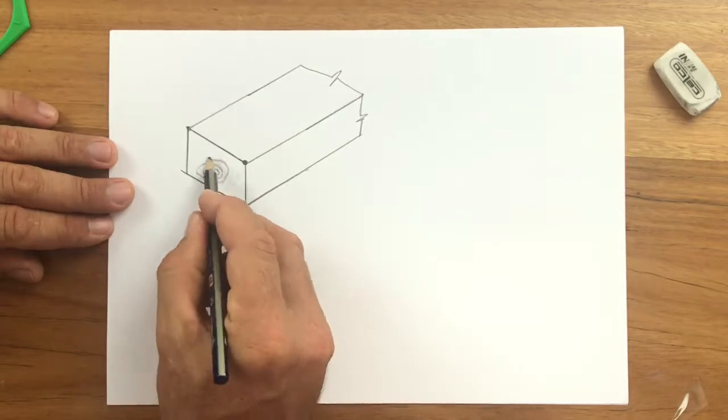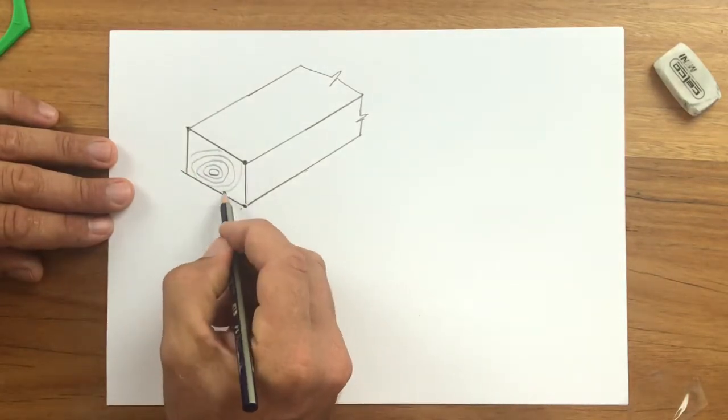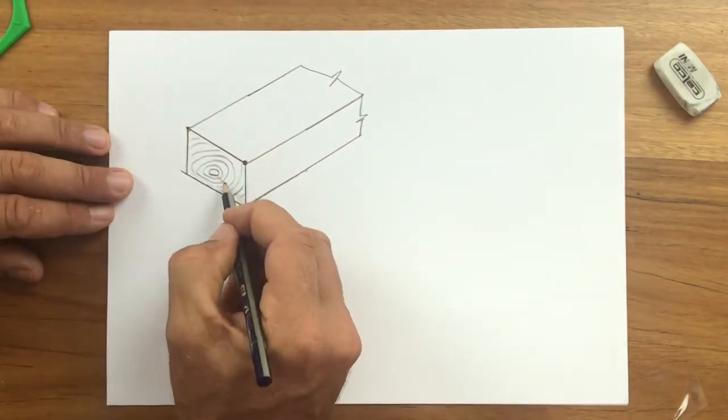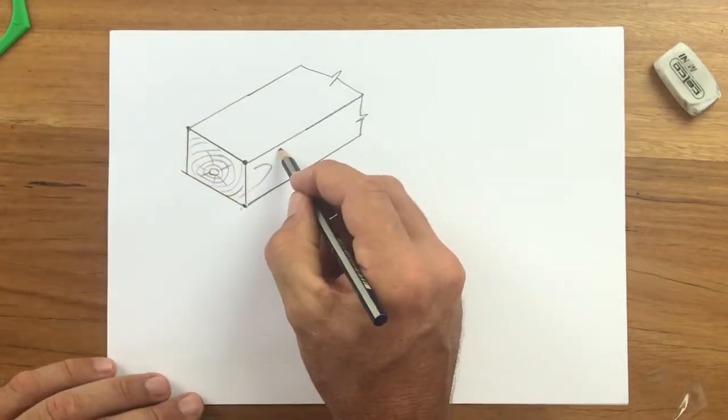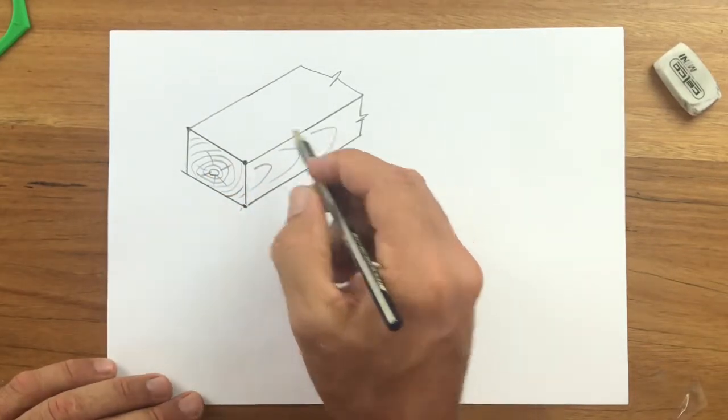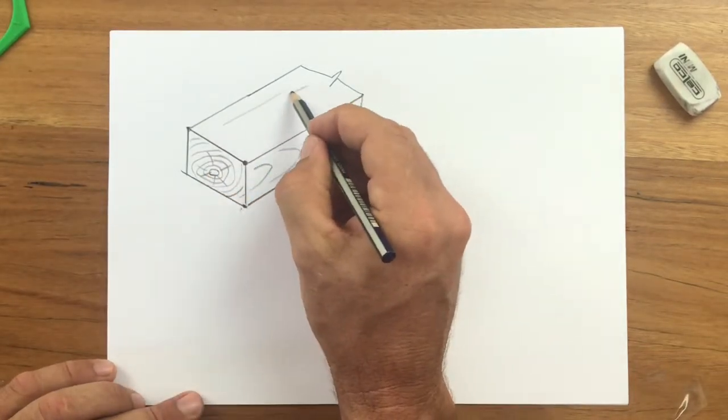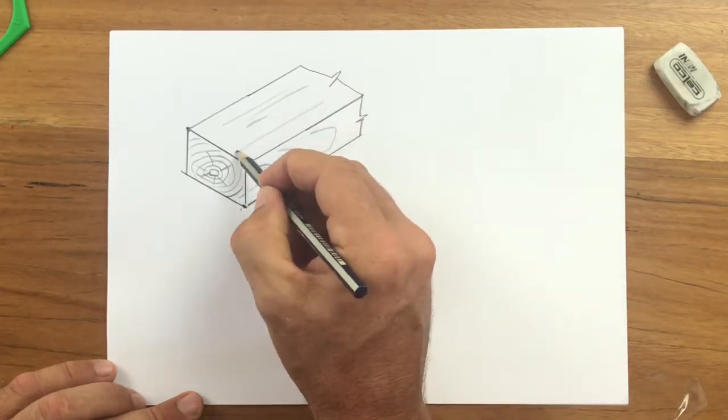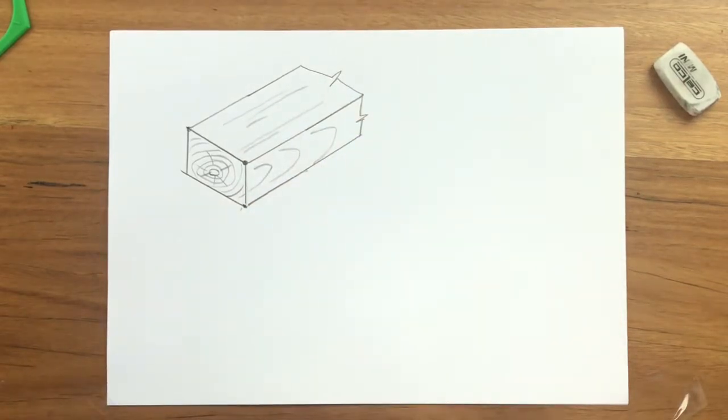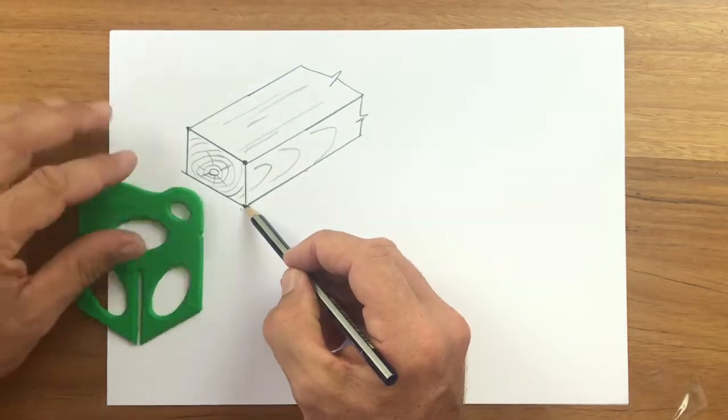The end grain would show the growth rings of the tree in a pattern that looks like that with some rays. Here's one possible way to show the edge and on the face we'll draw some little grain lines. That's the simplest way to do it.